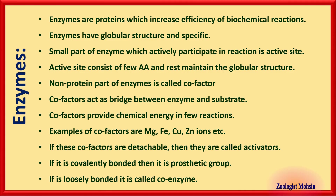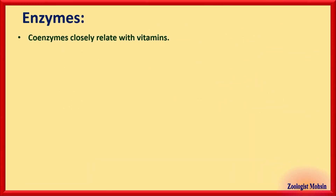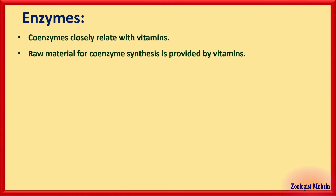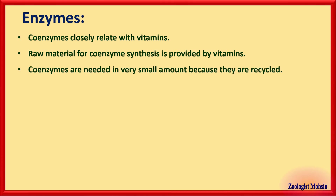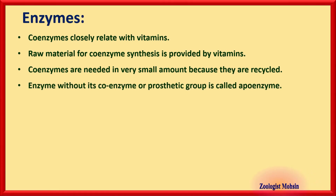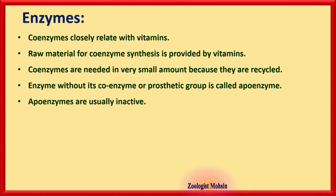If cofactors are loosely or weakly bonded and can be detached easily, they are called coenzymes. Coenzymes are closely related to vitamins — vitamins provide the raw material for coenzyme synthesis. Coenzymes are needed in very small amounts because they are recycled and can be used again and again. An enzyme without its coenzyme or prosthetic group is called an apoenzyme, and apoenzymes are mostly inactive.